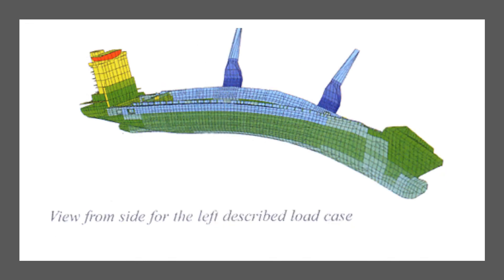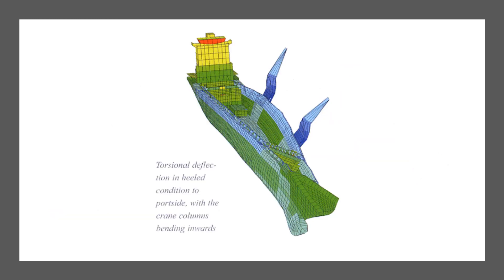This is the torsional deflection again in a heeled condition, but this time the heel is to the port side. The crane columns are again bending inwards. In the side view, the vessel is heeling to the port side and the cranes are also installed on the port side. You can see here how the torsional forces are acting on the vessel.